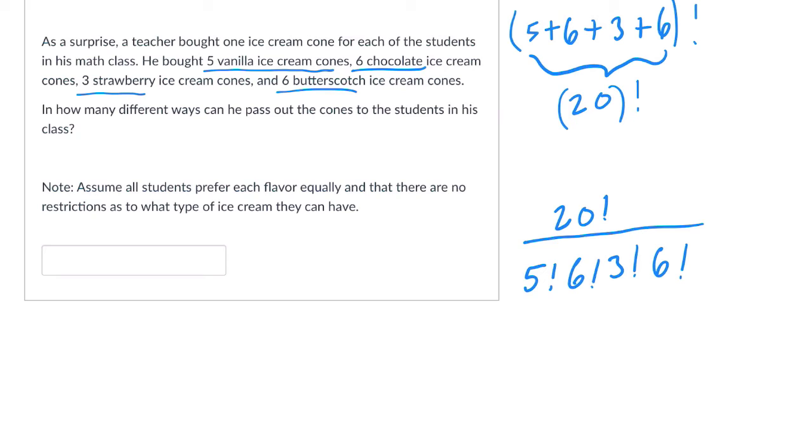And we can make lots of videos about this to understand it. But just be careful when you enter it on a calculator. Make sure when you're 20 factorial and you divide it by the denominator, put all these things in parentheses. Because if you just enter this, 20 factorial divided by 5 factorial, that's what I see students do. Then 6 factorial, 3 factorial, 6 factorial.